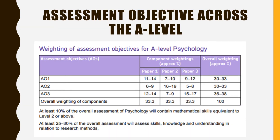Here is the information about the different assessment objectives across the exam, which comes from AQA. Looking at the overall weighting column, the proportion of marks for all three objectives is pretty much the same, but weighted slightly more towards AO3. You can also see that in paper two there's a lot of application — a high AO2 weighting — because of research methods, where knowledge has to be delivered in context to get the marks.